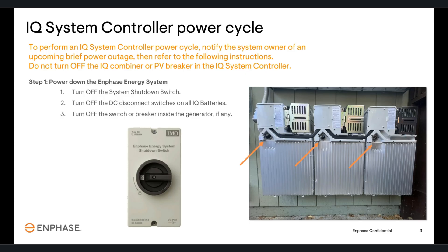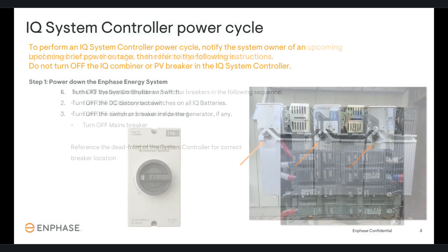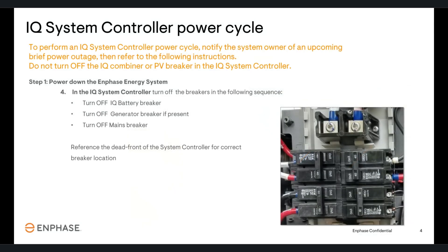Switch off the DC disconnect switches on all IQ batteries, and then switch off the switch or breaker inside the generator if any. In the system controller, you'll need to turn off breakers in the following specific order, as doing them out of order may induce errors or damage system components: turn off the battery breaker, then the generator breaker if present, and then the mains breaker.